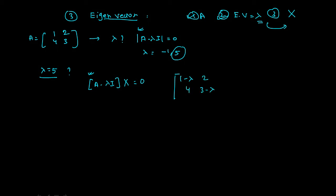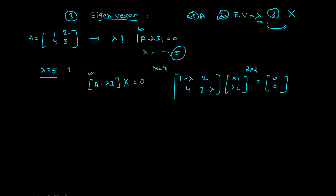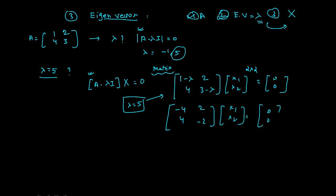We get [1−λ, 2; 4, 3−λ] and X written as [x1; x2] because it is a 2×2 matrix, equal to [0; 0]. Because my lambda value is 5, substituting: 1−5 = −4, and 3−5 = −2. So the matrix is [−4, 2; 4, −2] times [x1; x2] = [0; 0].